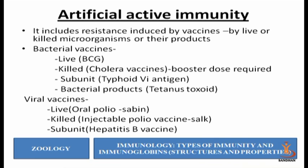Artificial active immunity is what we call vaccination. It includes the resistance induced by different types of vaccines. Vaccines can be of different types — for example, live vaccines, killed vaccines, microorganism products, and toxoids.